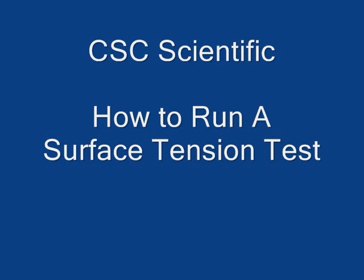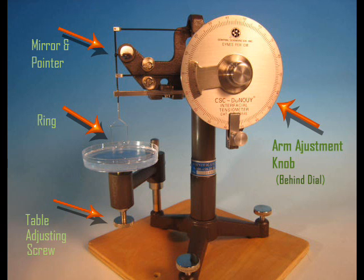This is a description of how to do a surface tension test using the CSC scientific tensiometer. The test results are read directly on the round dial on the front of the tensiometer.